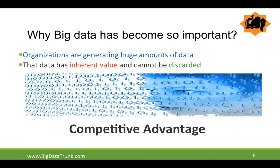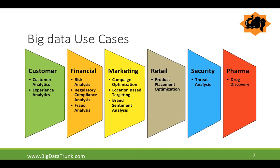Doug Cutting later joined Cloudera and is still the chief architect of big data there, and the energy and changes around big data have only been growing since. So why is big data so important? In simple terms, it gives a competitive advantage — it's a disruptive technology, and companies that understand this power have taken advantage to get ahead of their competition. Big data is used not just in one particular industry but across the board — in pharma, security, finance with fraud analytics, risk analytics, and several other implementations.